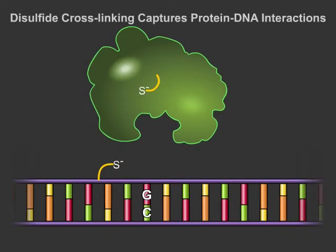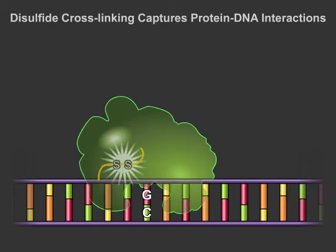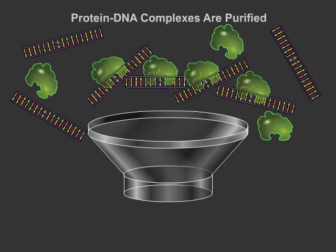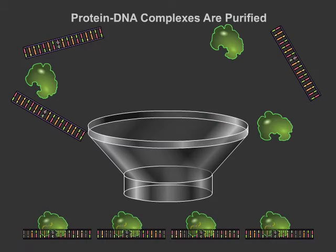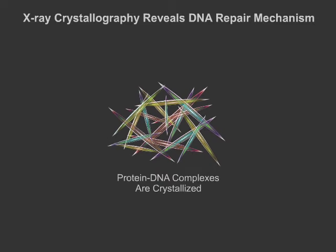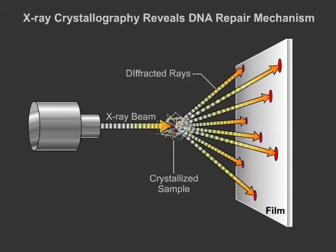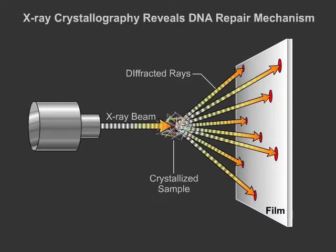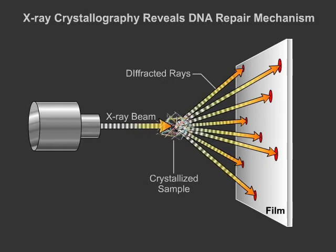A technique called disulfide crosslinking, which introduces a covalent bond between the protein and DNA, is being used to capture the interaction complex as HAG1 searches DNA for lesions. The cross-linked protein-DNA complexes are then purified to produce a homogeneous sample that can be crystallized and subjected to X-rays. The diffraction information from X-ray crystallography has led to new crystal structures allowing greater insight into the mechanism by which HAG1 searches DNA for damage.